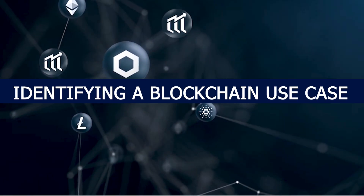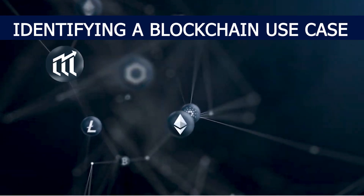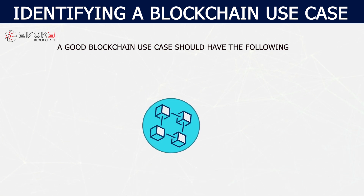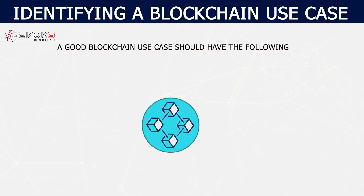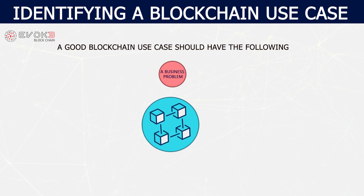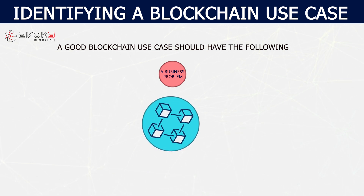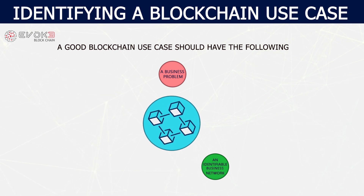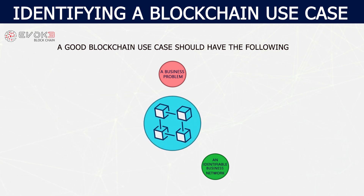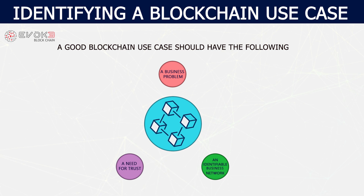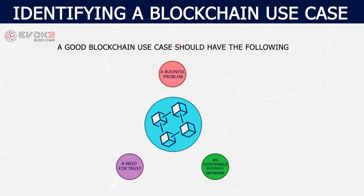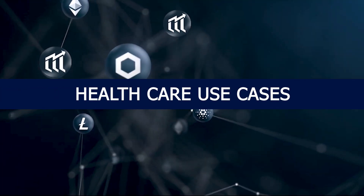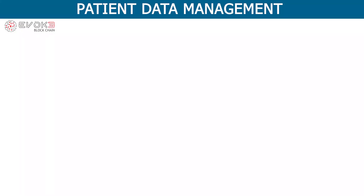Identifying a blockchain use case — we need to understand what kind of use cases could be used for blockchain. It should involve a business that requires blockchain technology to solve it, an identifiable business network, and a need for trust. Blockchain could be used where verification is done by a consensus algorithm.